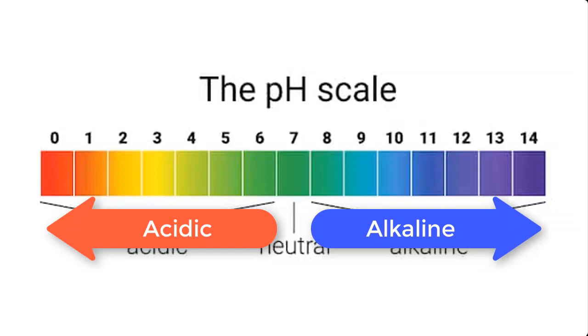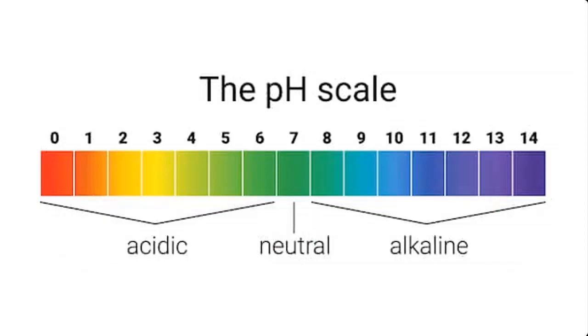Now every unit on the scale is represented by a color. In our test, what we're going to do is to match the color of our universal pH paper with the pH scale color, and that will determine the pH of our solution.